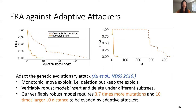We further evaluated robustness against unrestricted adaptive attacks, modifying the strongest unbounded black-box attack — the genetic evolutionary attack — to target properties of the robust classifiers. To target monotonicity, we designed a new mutation operator to move exploits to different locations in the PDF. To target our verifiably robust model, we spread insertions and deletions across different subtrees. Our model requires 3.7 times more mutations and 10 times larger L0 distance to be evaded by adaptive attackers compared to the monotonic classifier baseline.